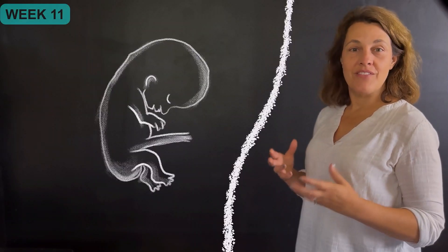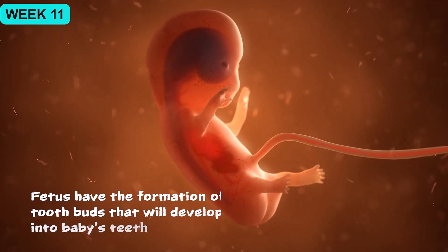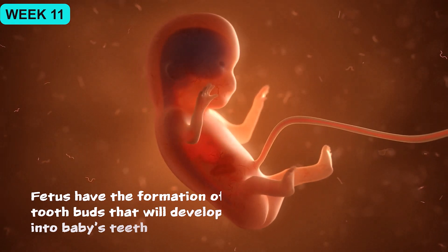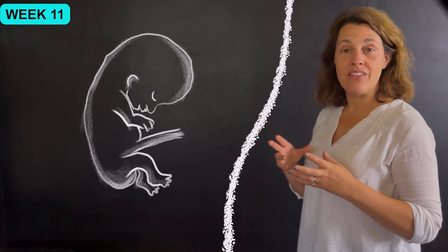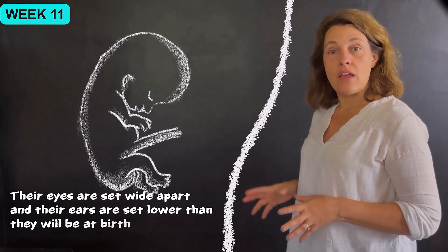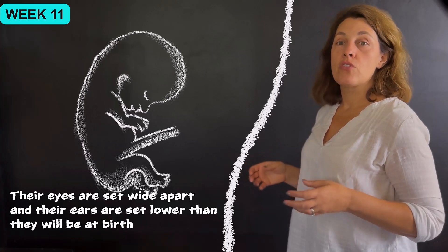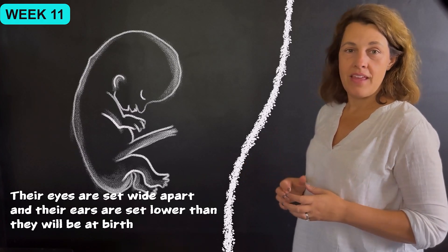During your 11th week, the fetus has the formation of tooth buds that will eventually develop into the baby's teeth. Now at this stage, the baby's head is still about half of the length of its body. Their eyes are set wide apart and their ears are set lower than they will be at birth.